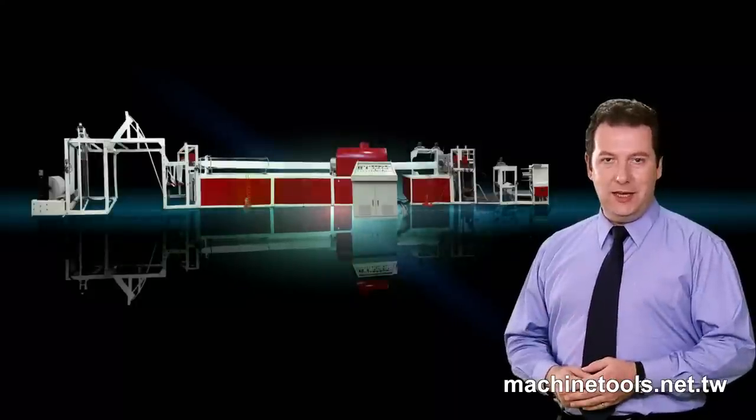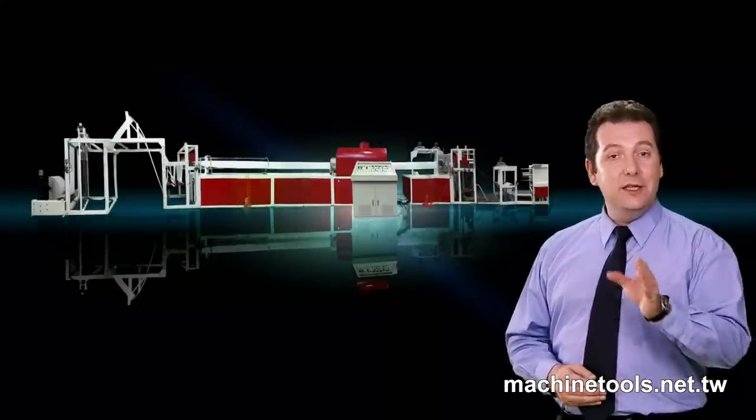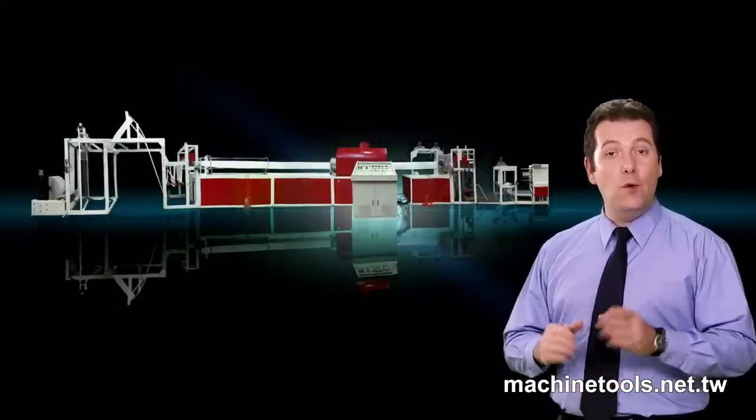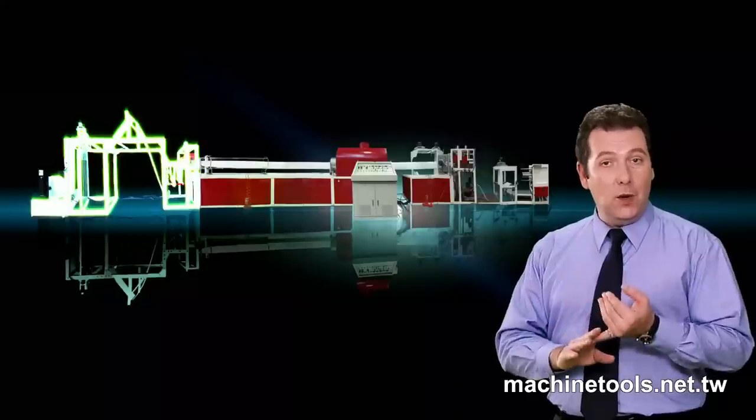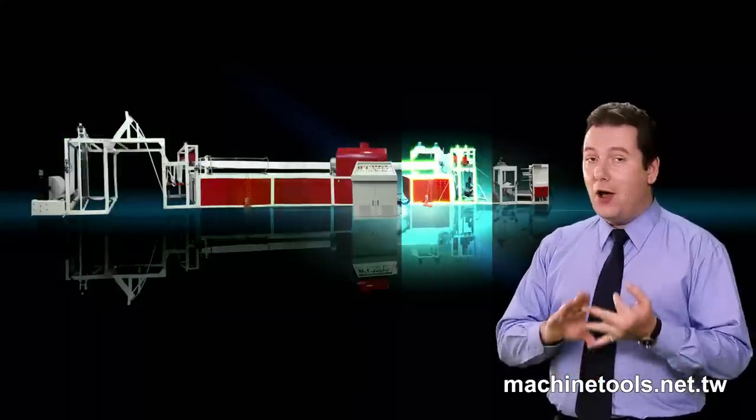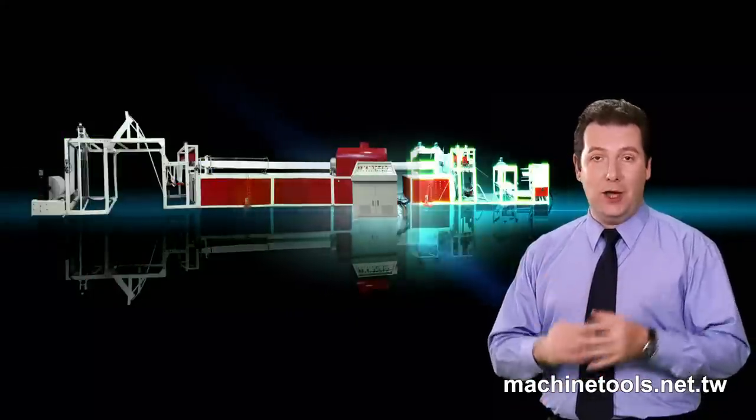Now turning to the inner liner pasting machine, this machine is split into four main sections: unwinder and take up, pasting device, hot air chamber, and rewinder.